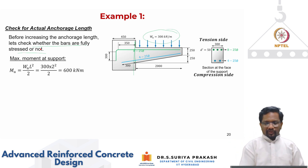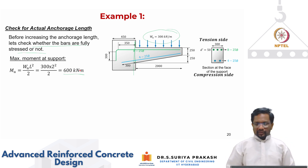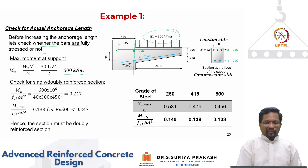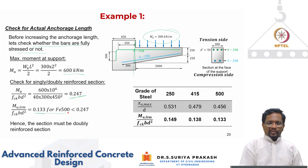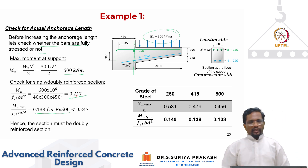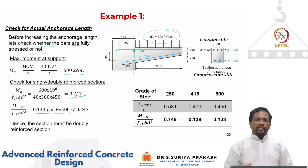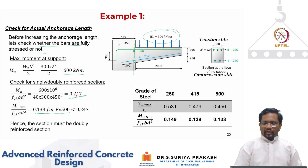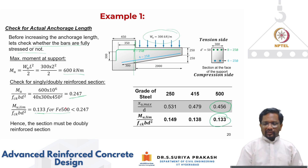The maximum moment for a cantilever is WL²/2 = 300 × 2² / 2 = 600 kNm. Checking: Mu / (fck × b × d²) = 0.247, and Mu_lim / (fck × b × d²) = 0.133 for Fe 500. Since the actual demand exceeds the limiting value, a doubly reinforced section is required — which is what we have, with eight 25 mm tension bars and four 25 mm compression bars.